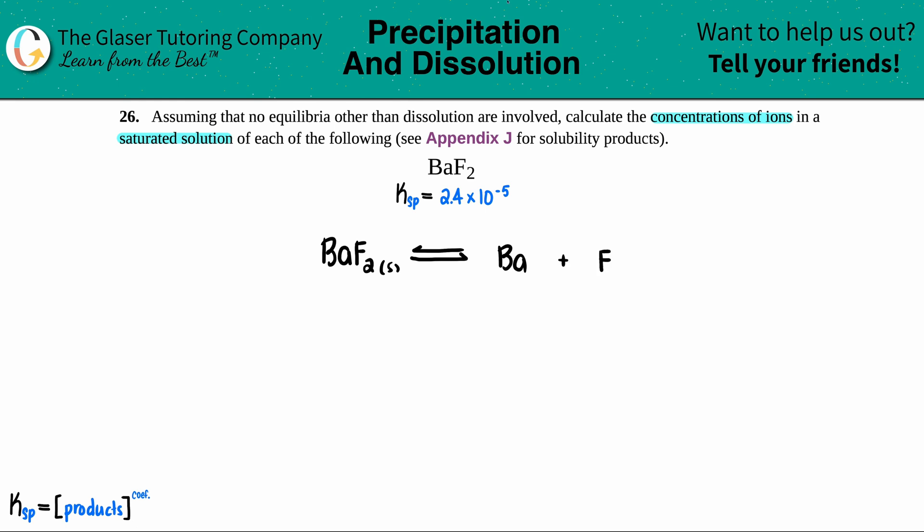Now let's just figure out what those charges are. Barium is in group two, so that's always a plus two charge. And the fluorine is in the halogen group. If it's bound with the metal in an ionic compound, it's a negative one. Since they have charges, they're aqueous.